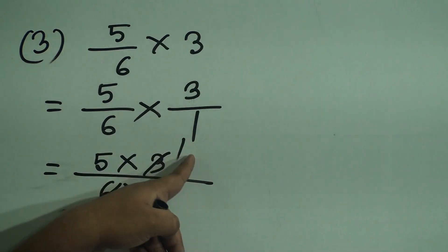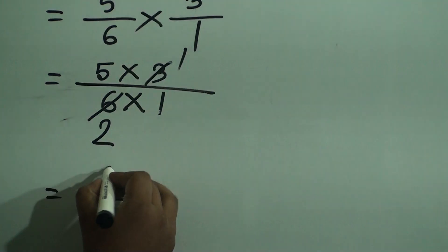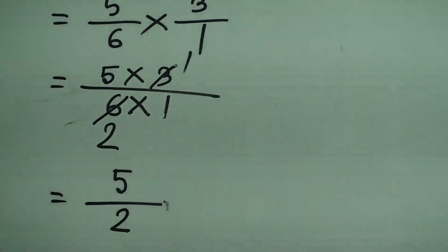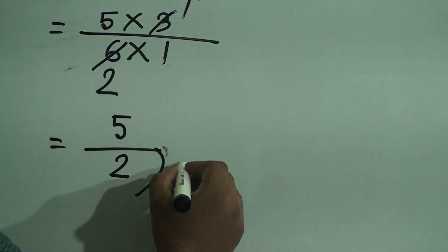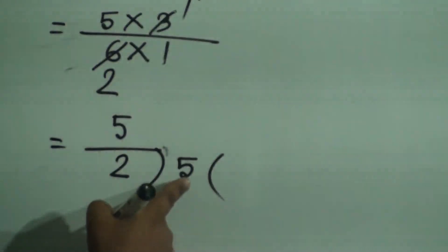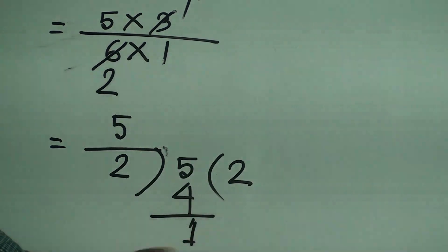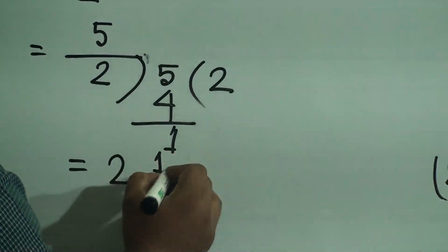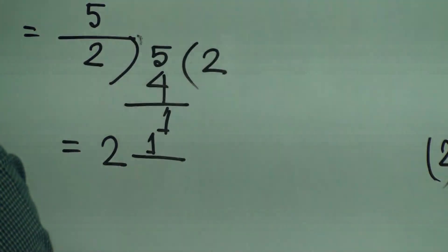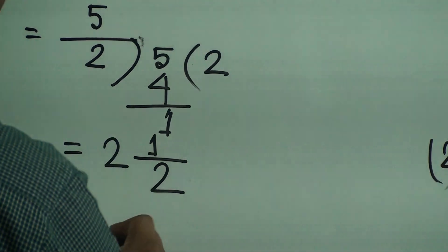So numerator 5 and 1 are left, and denominator 2 and 1 are left. We do multiplication: 5 with 1 gives 5, and 2 with 1 gives 2 — that means 5/2. It is an improper fraction, so we convert it into a mixed fraction. We divide 5 by 2: in 5, 2 goes 2 times; 2 twos are 4; subtract and we get 1. So quotient is the integer, remainder is the numerator, divisor is the denominator. The answer of question number 3 is 2 and 1/2. We must write the answer.